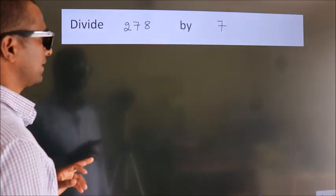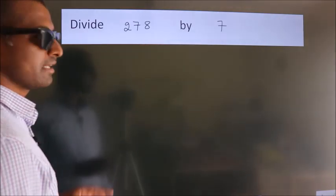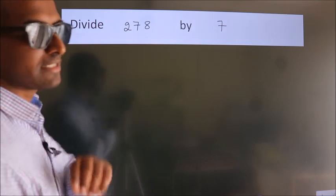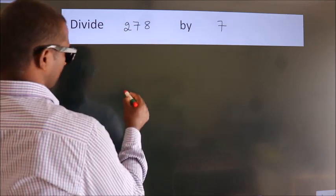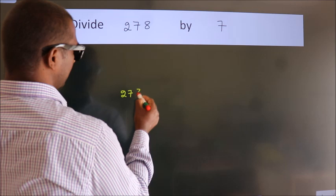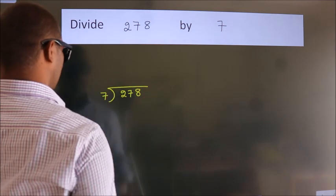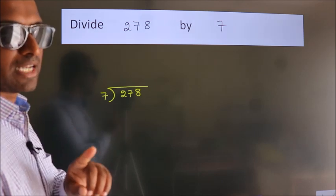Divide 278 by 7. To do this division, we should frame it in this way: 278 here, 7 here. This is your step 1.